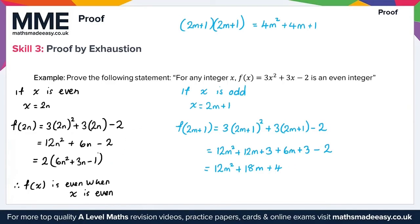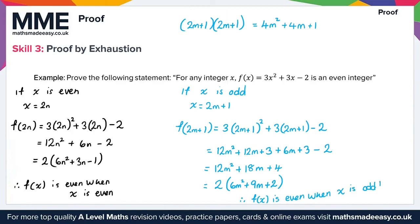Factoring out 2 gives 2(6m² + 9m + 2). Since m is an integer, 6m² + 9m + 2 is also an integer, so 2 times that integer is an even integer. Therefore f(x) is even when x is odd. And therefore f(x) is even for any integer x, which proves the statement. That gives us everything for skill 3 on proof by exhaustion.